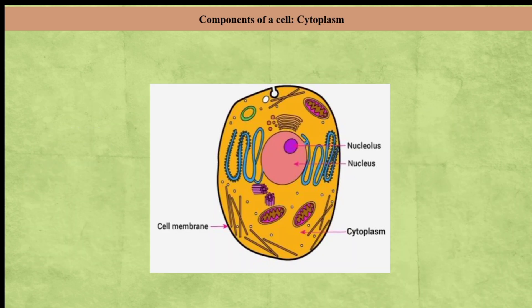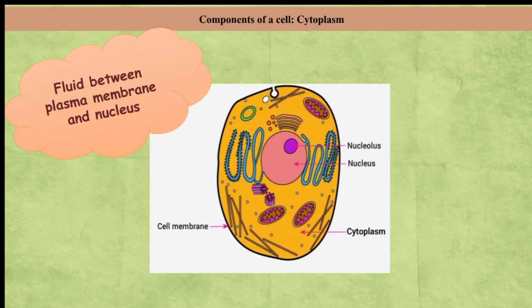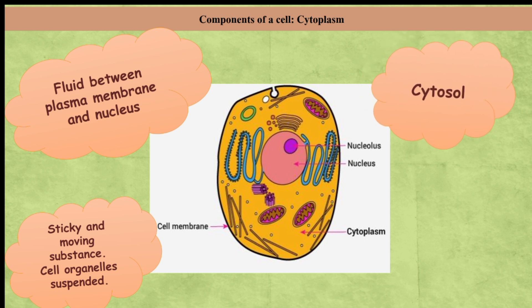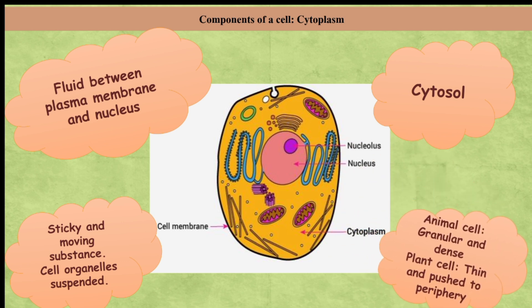The next cell component is cytoplasm. Cytoplasm is a fluid between the plasma membrane and nucleus. It is a moving, sticky substance and many cell organelles are suspended in it. The part of the cytoplasm other than organelles is the cytosol, which stores vital substances like amino acids, glucose, and vitamins. In animal cells cytoplasm is more granular and dense, while in plant cells it is thin and mostly pushed to the periphery due to a larger central vacuole.